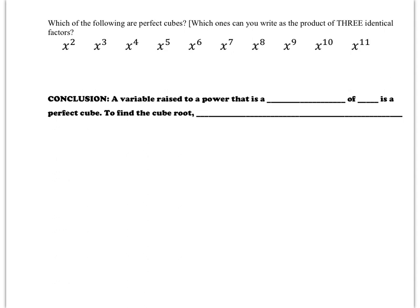Just like when we were doing square roots we had variables, we're going to do the same thing with cube roots. Before we decide how to do that, let's think about which variables are going to be perfect cubes — which ones can you write as a product of three identical factors? As a reminder, the reason the number 8 is a perfect cube is because 2 times 2 times 2 is 8. You have 3 of them, not 2.